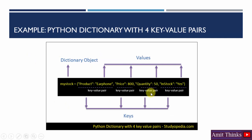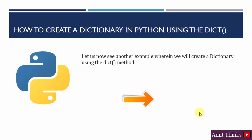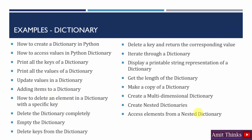Let us see another example with four key-value pairs. After that we will run all these live examples with all possible concepts in dictionaries. Here is a dictionary object with four key-value pairs — keys are product, price, quantity, and in_stock; values are earphone, 850, and yes. We will also see an example using the built-in method dict(), and then run all these examples to complete the concept of dictionaries in Python.